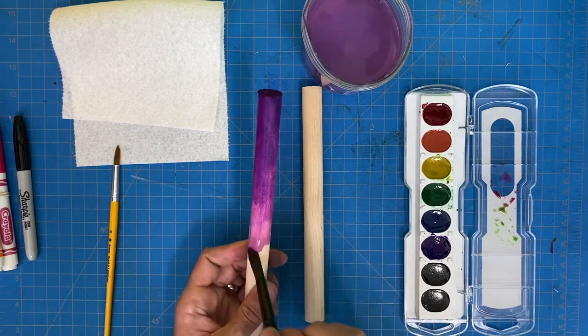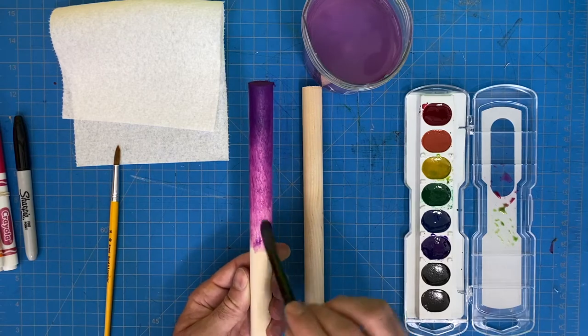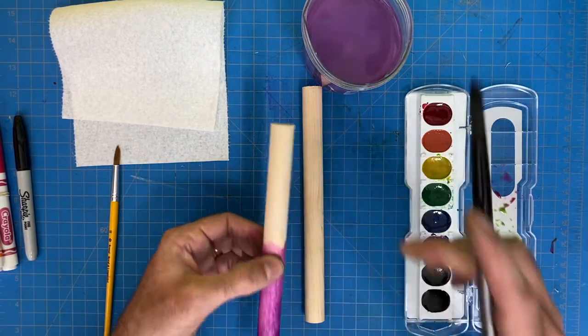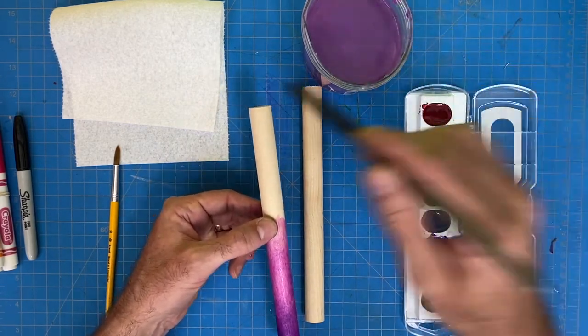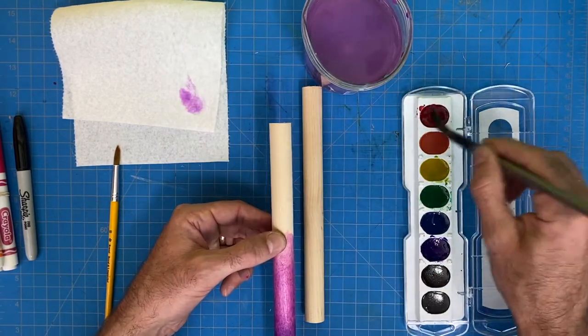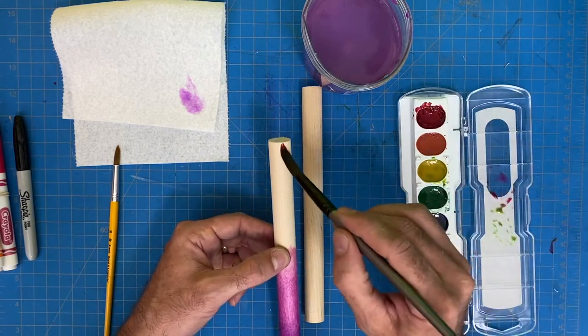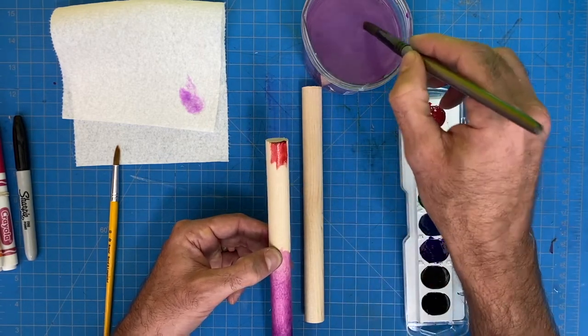Now I need to blend red in here. So I'm going to go ahead and flip it around. And you can see this nice ombre effect happening. Dry my brush and go into red and get a nice thick red color.